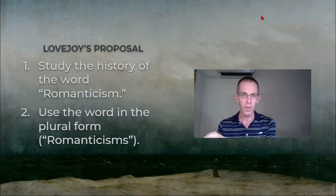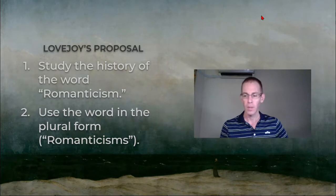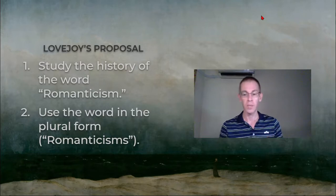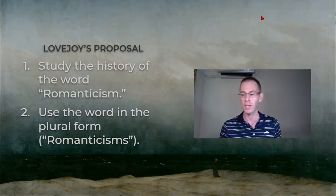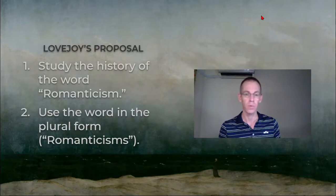So what can we do? Lovejoy has two proposals about this. First, we can study the processes by which the word 'romanticism' came to have all these different and conflicting associations. Second, we could use the word in its plural form—so we can talk about romanticisms.